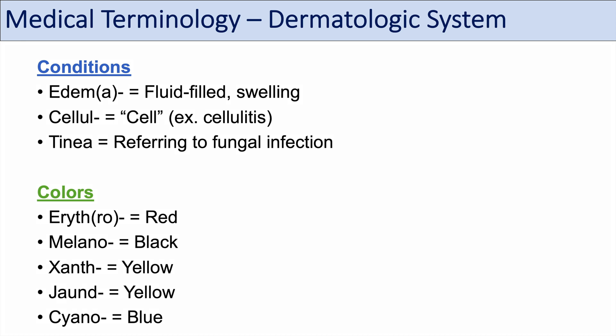So we learned about some of the prefixes and suffixes we can use to describe certain skin conditions: pyo referring to pus, bul referring to bulla, vesicule referring to vesicles, edema referring to fluid-filled or swelling, cellule referring to the condition cellulitis, and tinea referring to fungal infections. Some of these colors can also be used to describe certain types of cells and conditions.